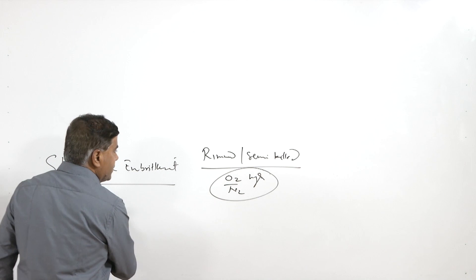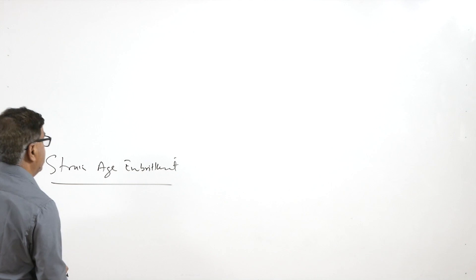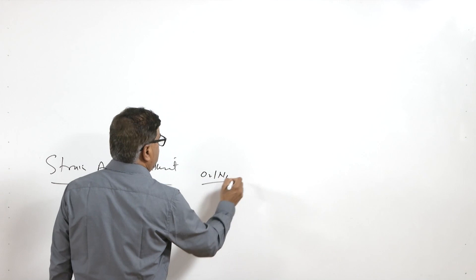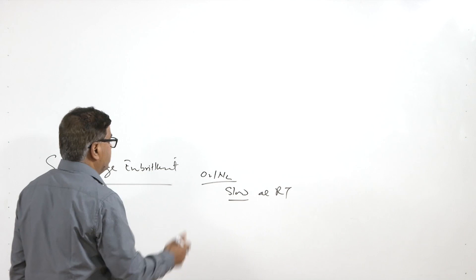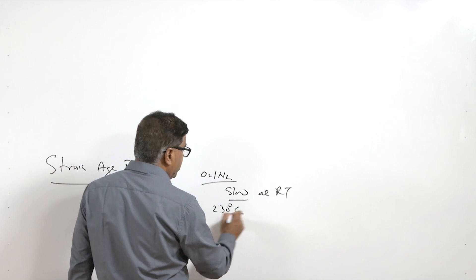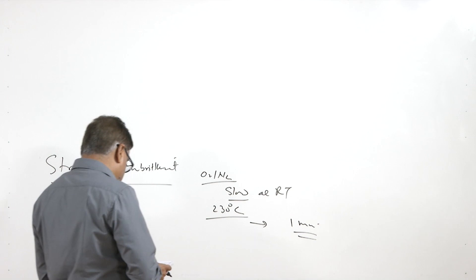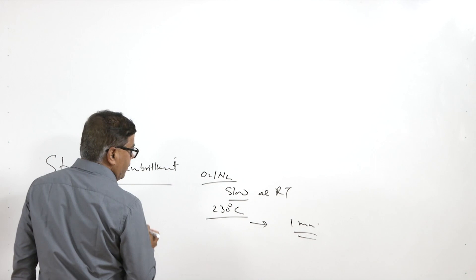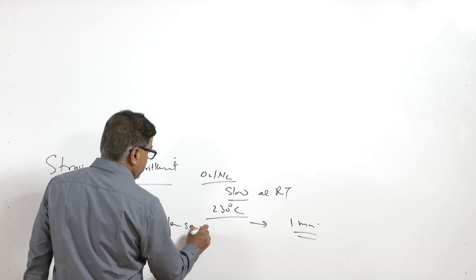Since the diffusion of oxygen and nitrogen is involved, the process is slow at room temperature and may take a few hours to a few days for the strain ageing effect to manifest. But when the component is exposed at high temperature after deformation, it immediately causes the strain ageing effect within one minute of exposure. At high temperature, the strain ageing effect is much faster than at room temperature. Killed steels, which have a deficiency of oxygen, are less sensitive for strain age embrittlement.